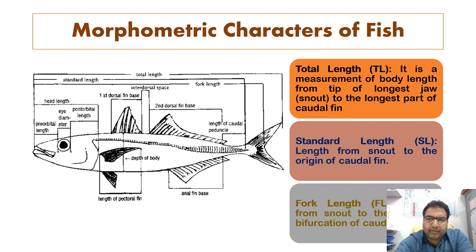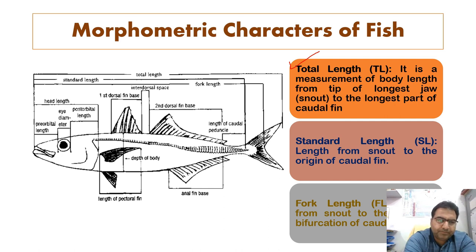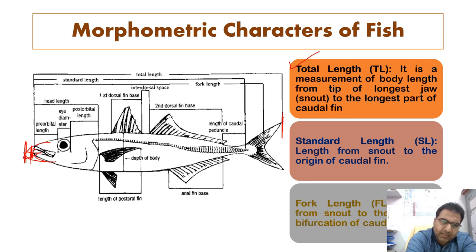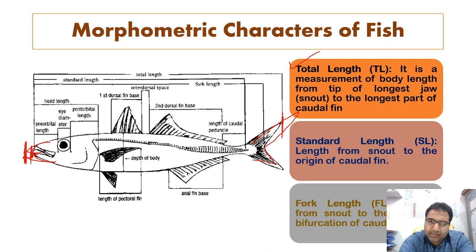The first important measurement is total length, denoted by TL. It is the measurement of the body from the tip of the longest jaw — whether the upper or lower jaw is longer — to the tip of the longest part of the caudal fin. So it is from the longest snout/jaw to the longest caudal fin ray.